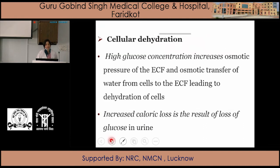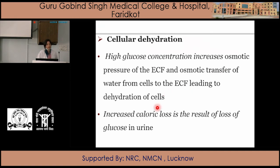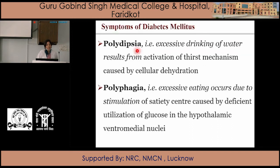High glucose concentration increases the osmotic pressure of the extracellular fluid, causing cellular dehydration as osmotic transfer of water occurs from inside the cells to the ECF. This also leads to increased calorie loss from glucose lost in the urine. Polydipsia occurs because of excessive loss of water in the urine — the thirst mechanism is activated, resulting in excessive drinking of water, which further contributes to cellular dehydration.